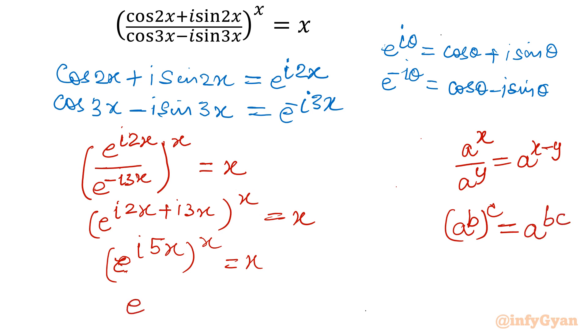I will write i 5x times x. The equation will convert to e raised to the power i 5x square equal to x. Now we will be taking log both sides, natural log both sides. ln e raised to the power i 5x square equal to ln x.